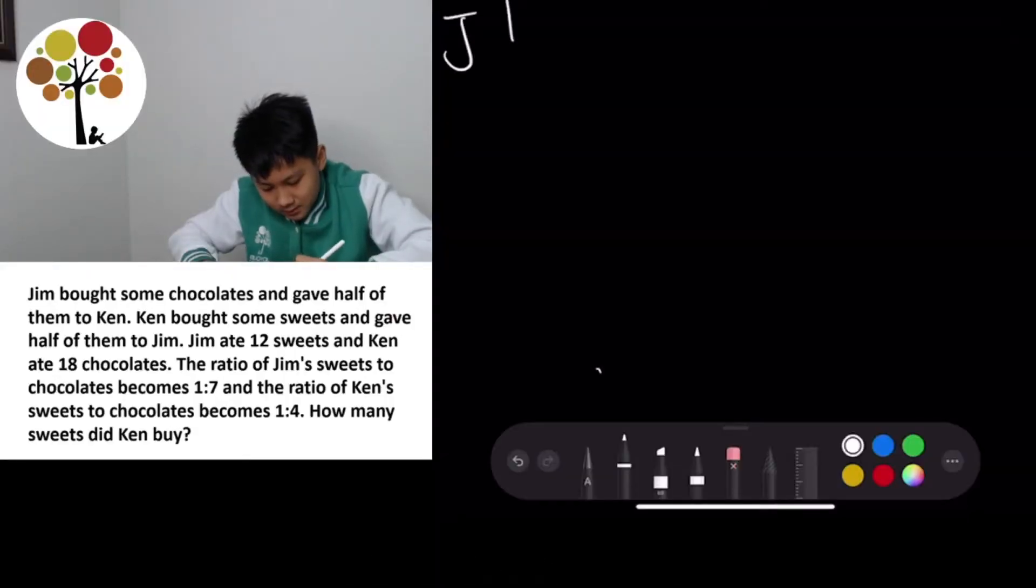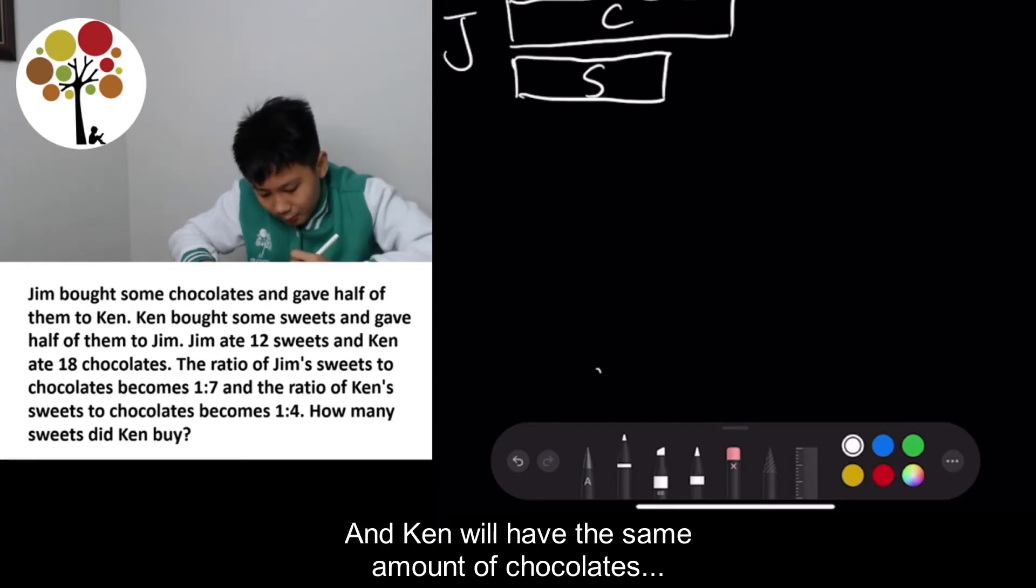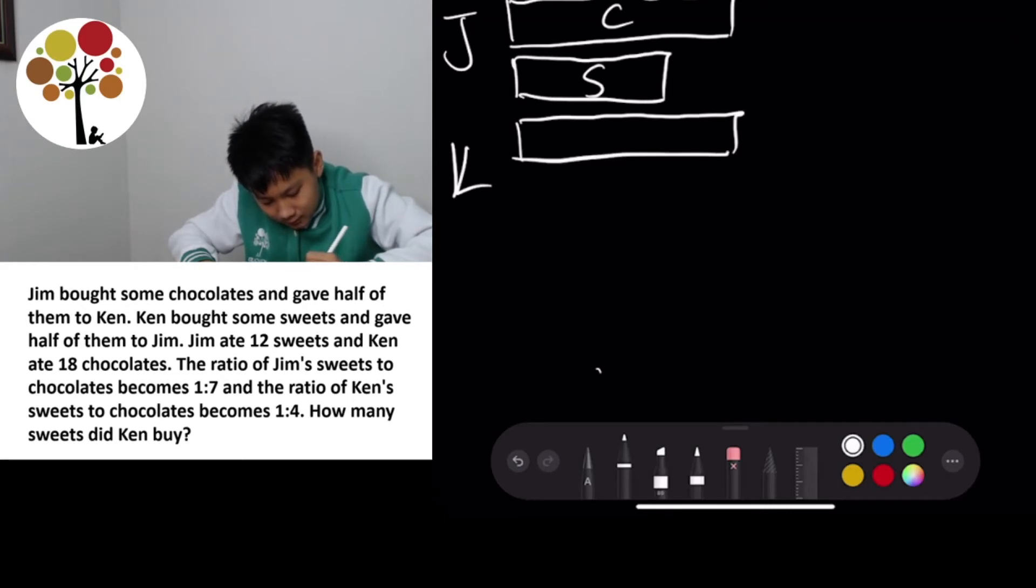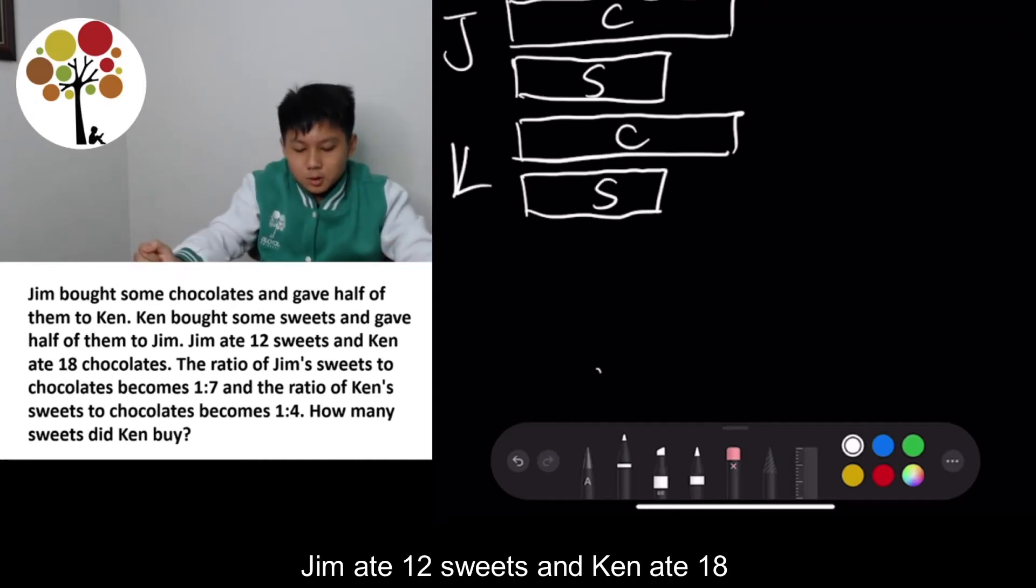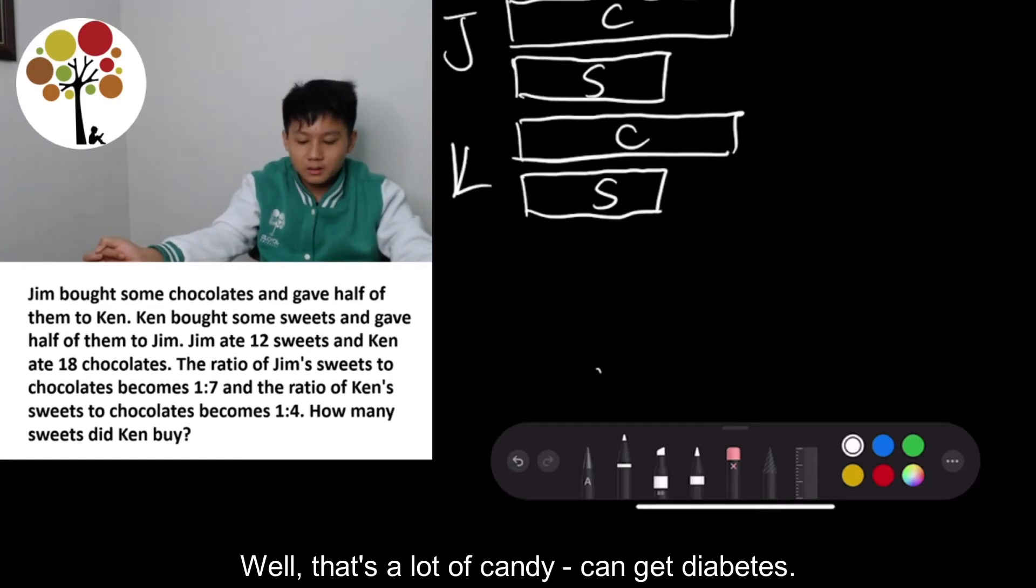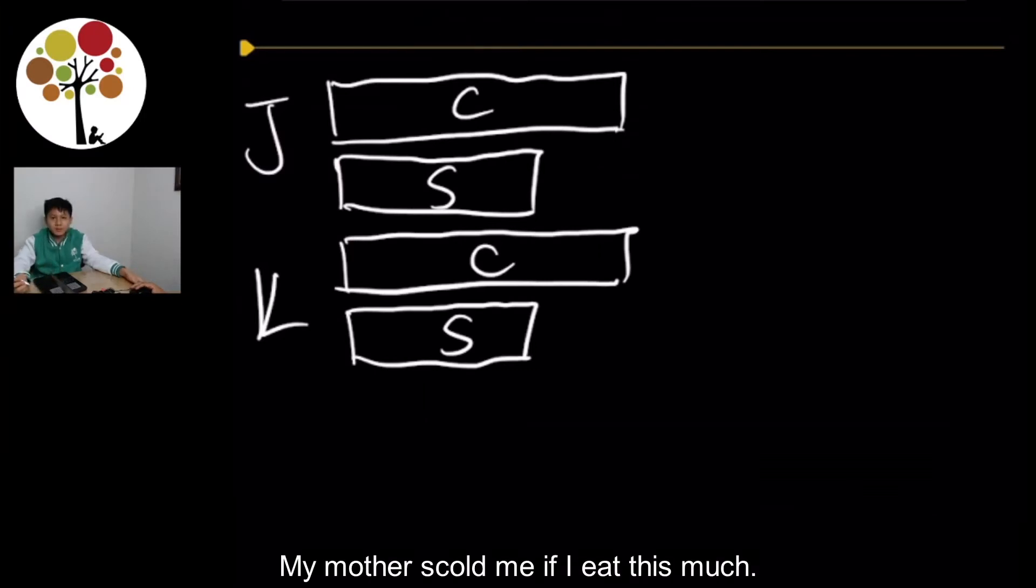So Jim, certain amount of chocolates and certain amount of sweets. So Jim ate 12 sweets and Ken ate 18 chocolates. Wow, that's a lot of candy. Get diabetes. My mother scold me if I eat this much.